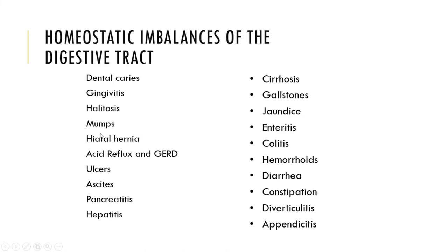Next on the list we have mumps, which are essentially swollen parotid glands as a result of a virus. We're not going to get too much into that in this course since it's not a virology course, but know that mumps involve swollen glands resulting from a virus.